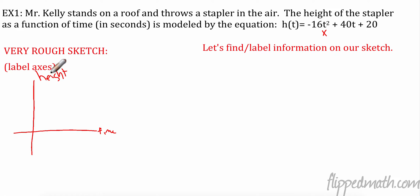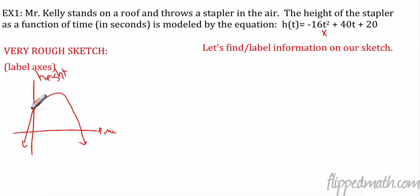We're drawing a parabola. His initial height is somewhere in the air — he's on a roof. We know we'll have a maximum vertex because the leading coefficient is negative, so the parabola opens downward. And we know the stapler will hit the ground at some point.